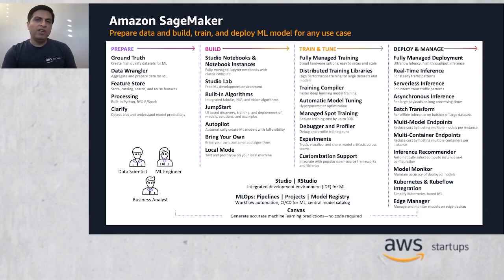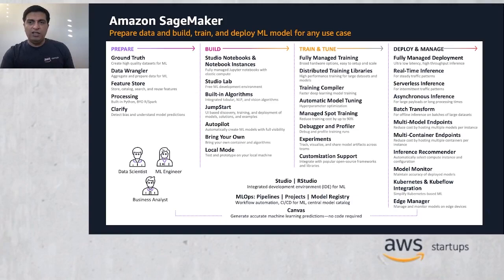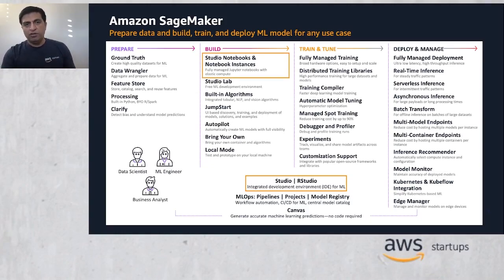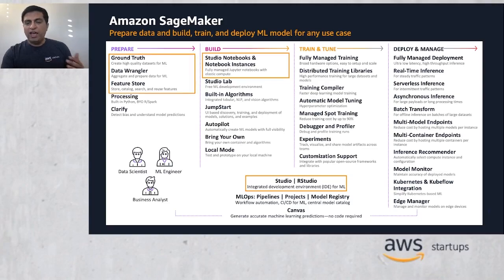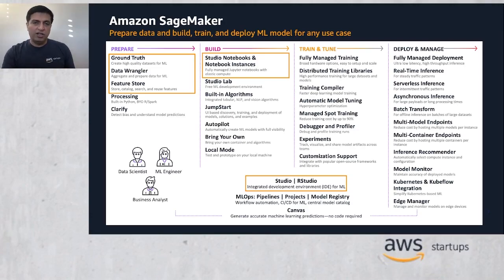First up, we have SageMaker Studio, which provides a web-based, collaborative, and interactive IDE for machine learning. The Studio Notebooks provide JupyterLab-based interactive notebooks for code and interactive responses. Both are a very important part of the machine learning lifecycle and data prep process. Then we have the actual tools: SageMaker Ground Truth, SageMaker Data Wrangler, and SageMaker Feature Store, which provide ML engineers and data scientists ways to deal with data in preparation for the machine learning journey.